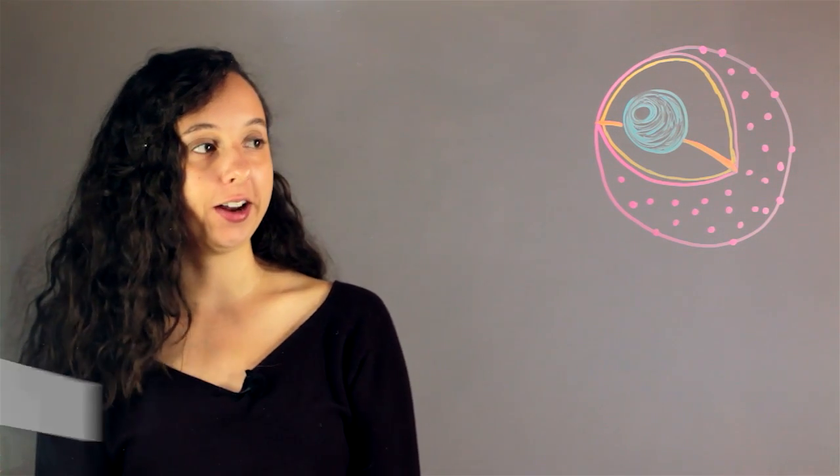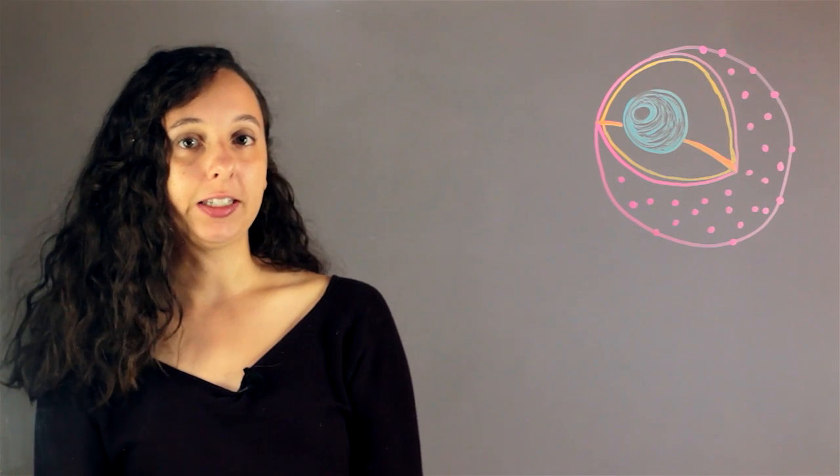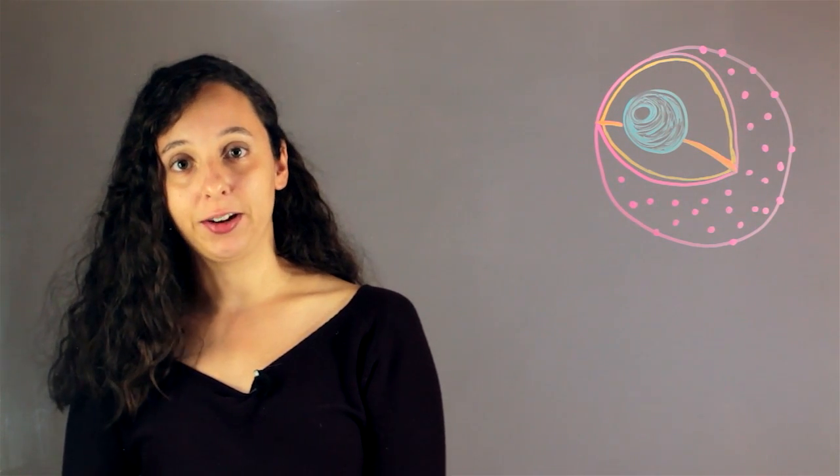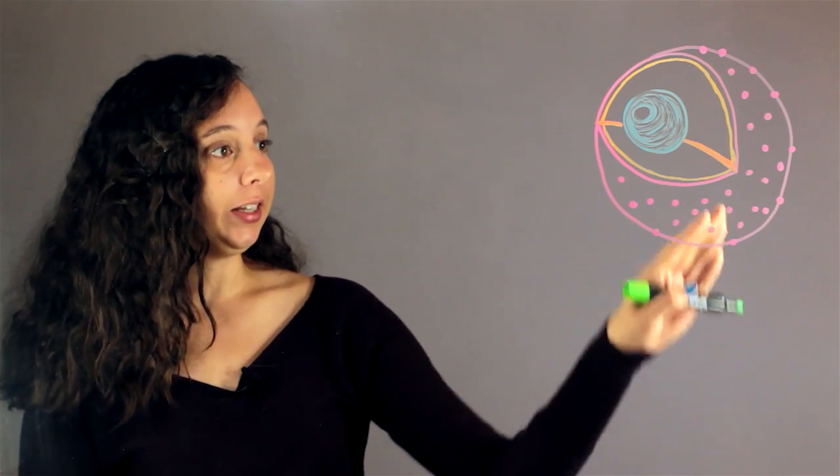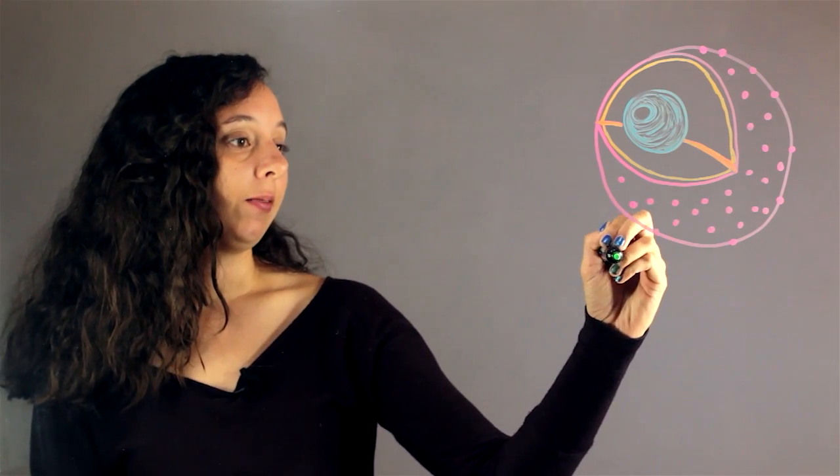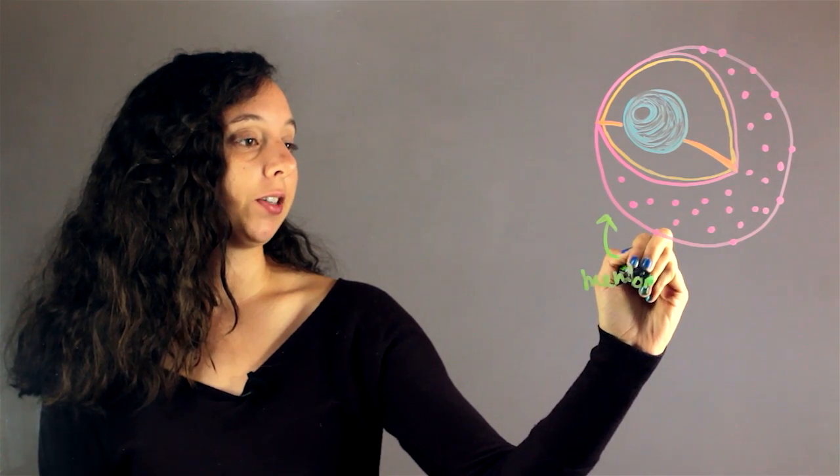Alright, so let's look at a diagram of a nucleus. So remember the nucleus is inside of the cells and it's actually the control center of cells. And so it looks like this, and right here it has a little membrane protecting it from the rest of the cell.